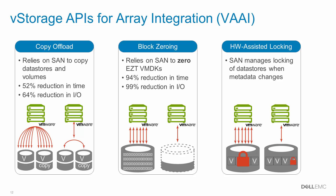The block zeroing primitive is associated with the creation of eager zeroed thick virtual disks. Without the primitive, the vSphere host is responsible for writing zeros throughout the virtual disk at the time of creation. With the primitive enabled, the SC-Series array handles this task, resulting in the creation of virtual machines with eager zeroed thick disks almost instantly.